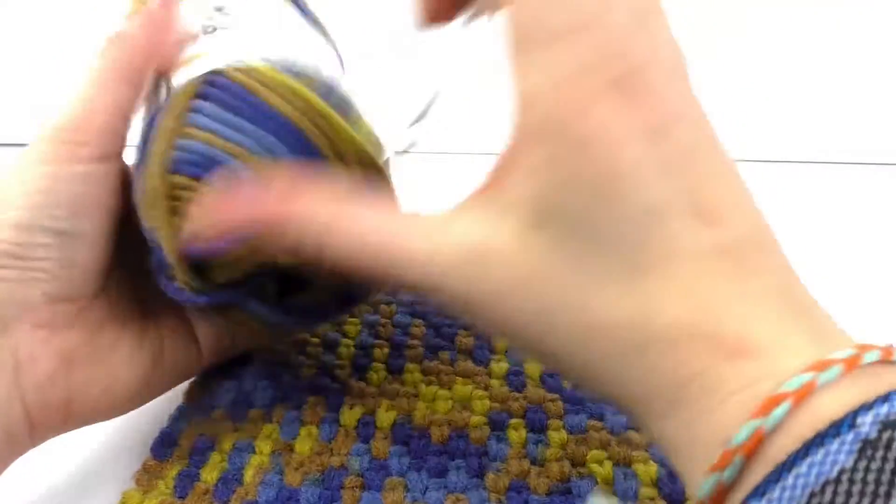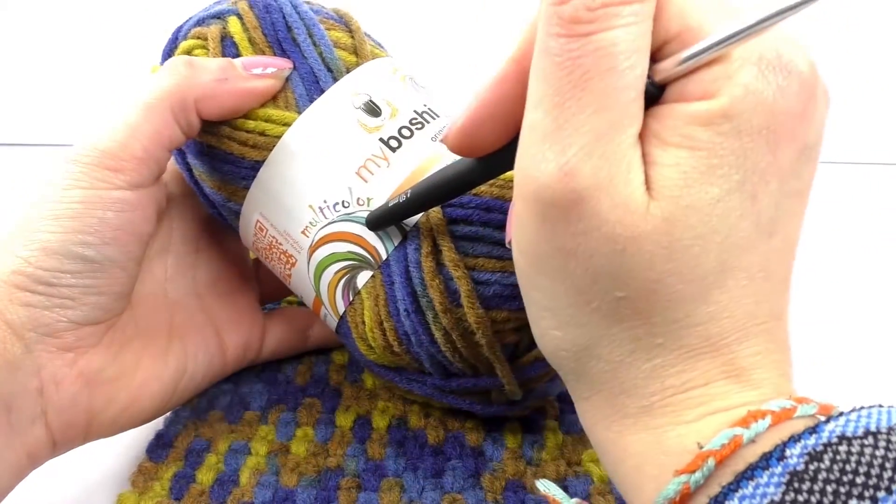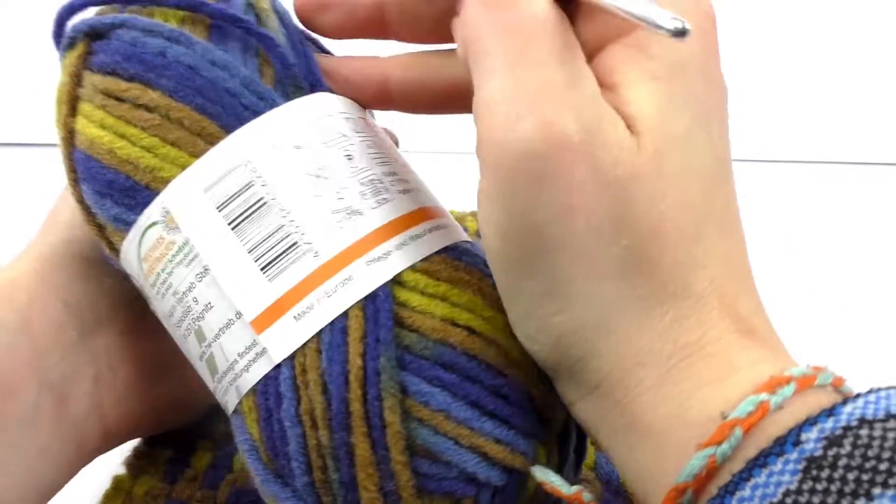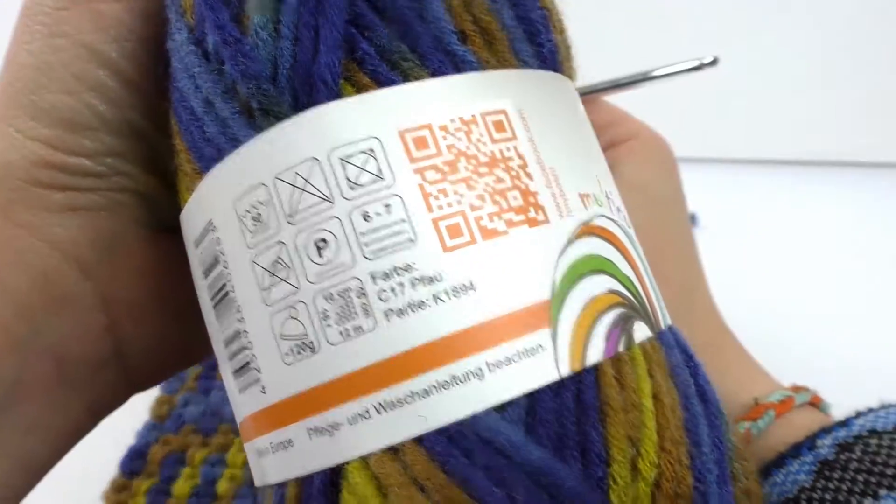I use this kind of wool called My Boshi, multicolored as you can see. Let me show you the labels really quick. This is C70 Brow.